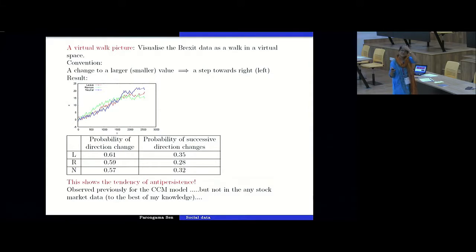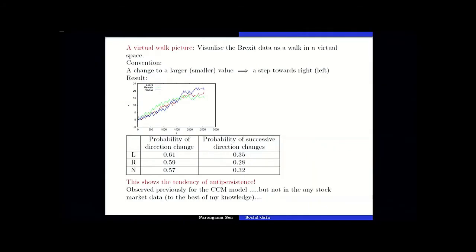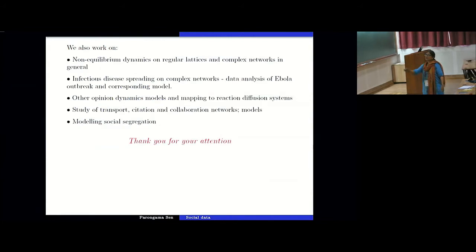So this is very interesting we found because this kind of anti-persistence we also found from an econophysics model, again a kinetic exchange model, the CCM model, this is real data. But when we did the CCM model we found this tendency of anti-persistence, but in the actual stock market prices we tried to obtain that, but that was not done in great detail. So to the best of my knowledge we did not find it from the real data, but this is one real data which is showing it. I don't know the explanation right now and let me just, I have just written what other things we do, but I don't have any time. So thank you for your kind attention.